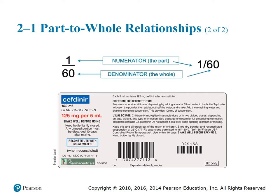If a drug says 125 mg per 5 mLs, this means that for every 5 mLs of oral suspension, there is 125 mg of the drug in it.